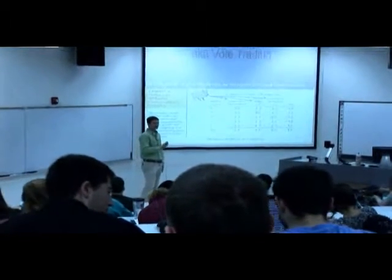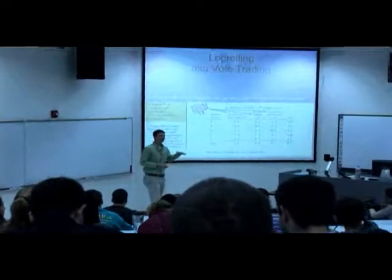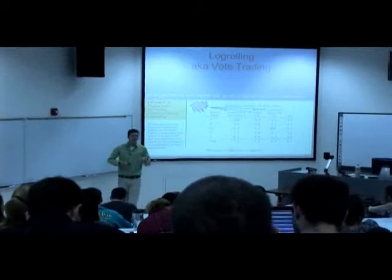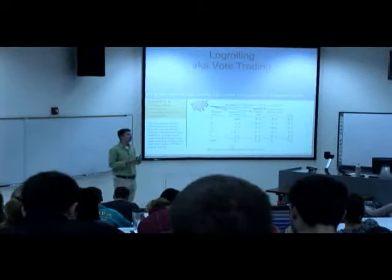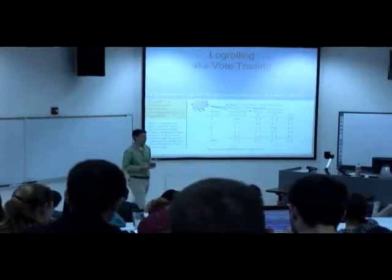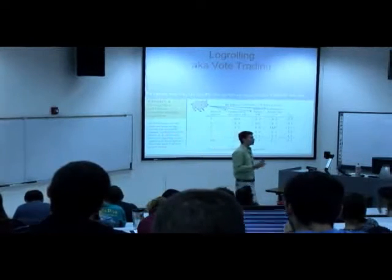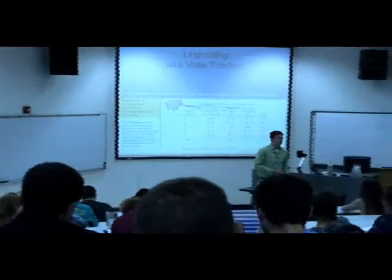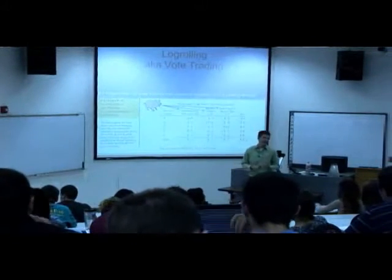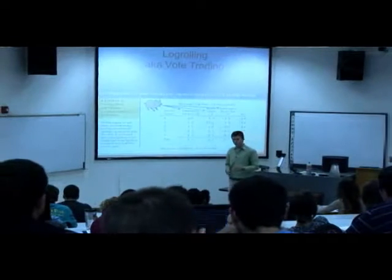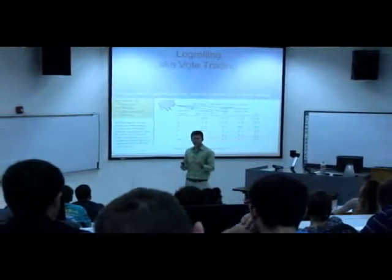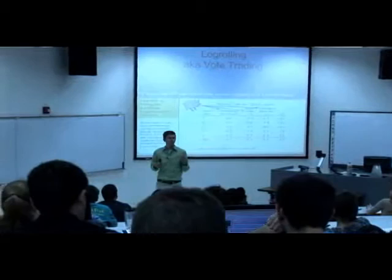So this example from exhibit six has an assumption that we've got five areas that are all of equal size, which means that they all have one representative, and each representative gets one vote. And so there's three project proposals. We can either build a post office in A, we can dredge a harbor in B, or we can build a military base in C.